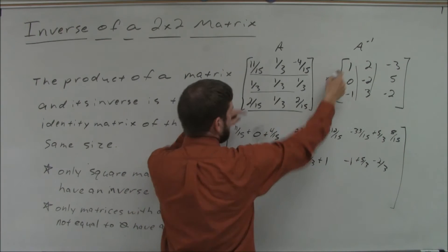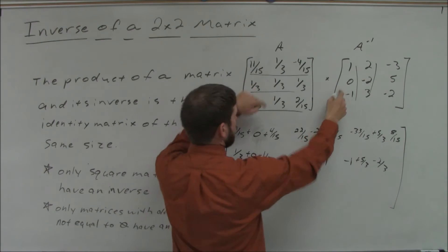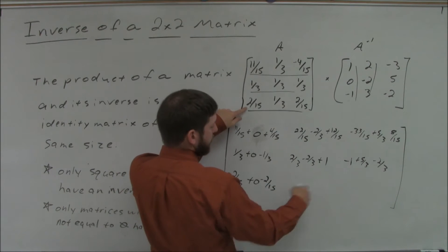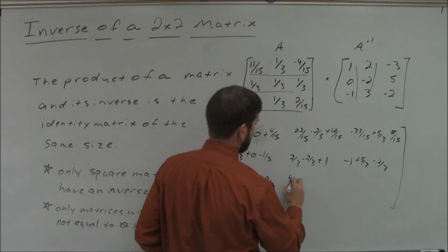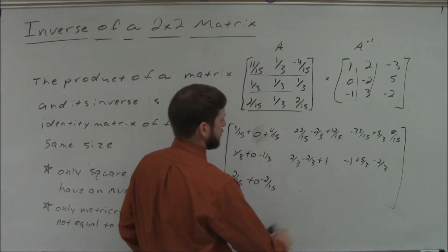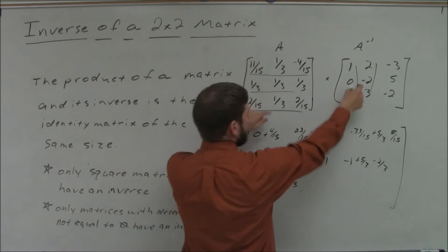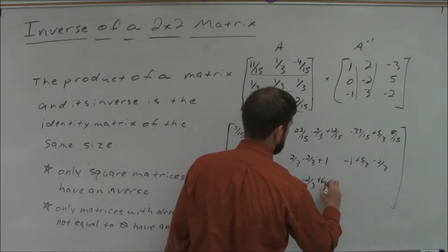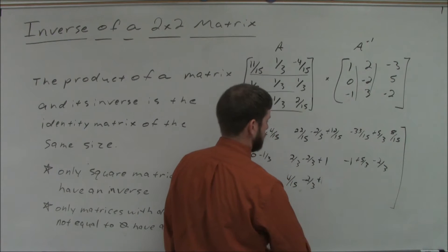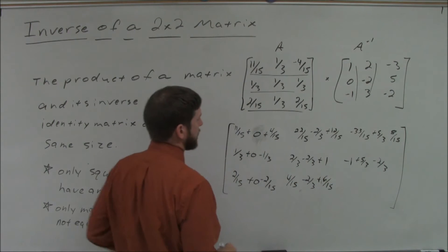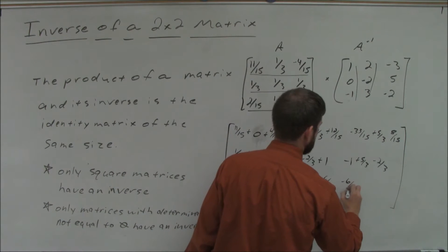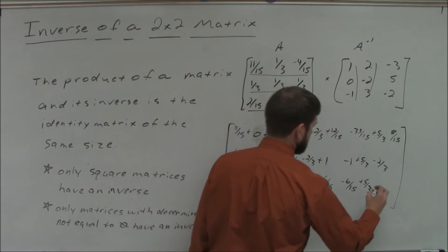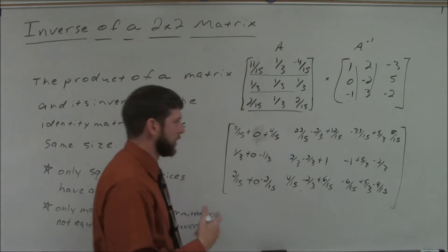For row 3, column 1: 2/15 times 1 is 2/15, plus 1/3 times negative 1 is negative 2/15. For column 2: 2/15 times 2 is 4/15, plus 1/3 times negative 2 is negative 2/3, plus 2/15 times negative 3 is negative 6/15. For column 3: 1/3 times negative 5 is negative 4/15.